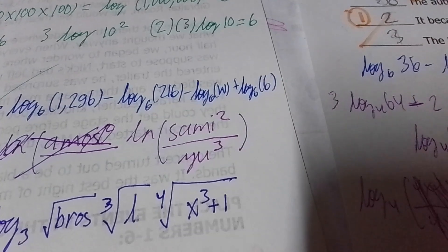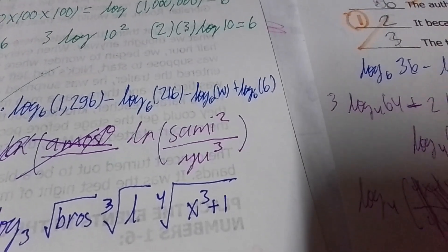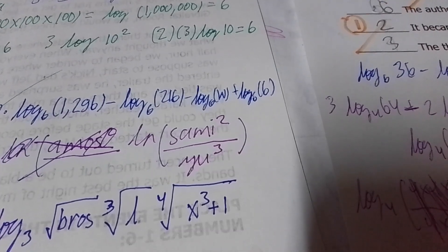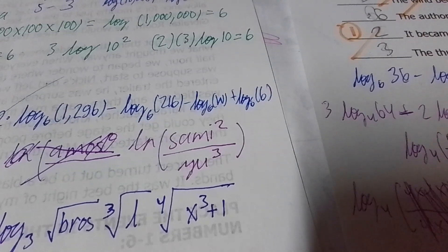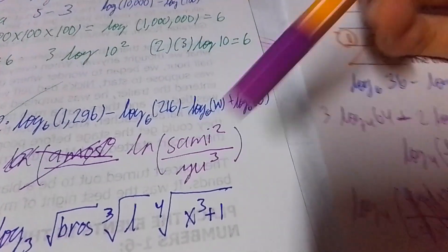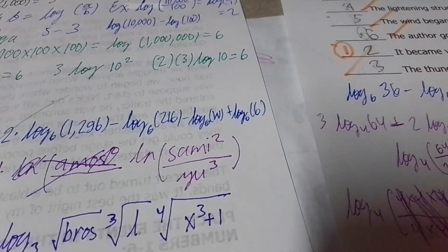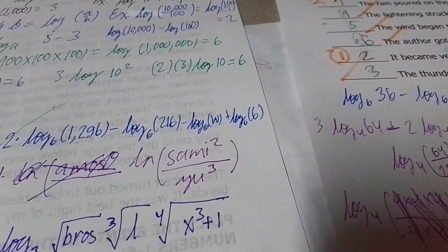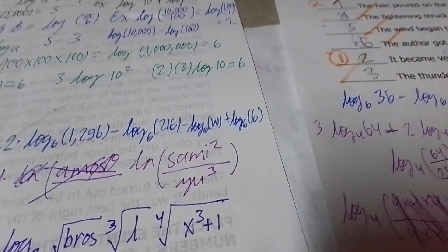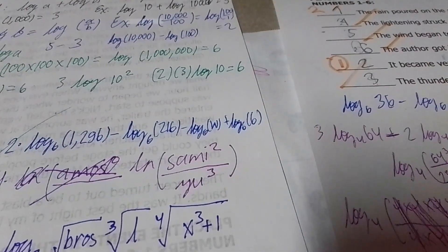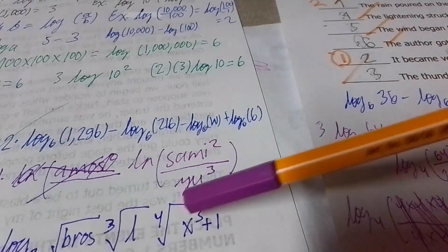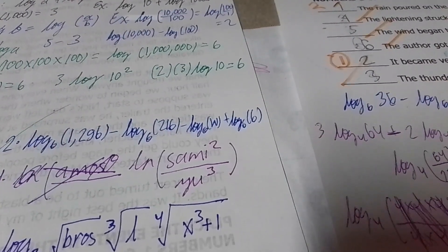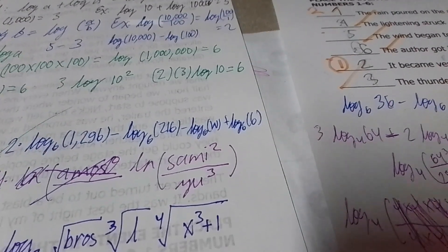How do we translate this simplified form into its expanded form? SAMI is in the numerator, and U is in the denominator. What's in the numerator is always added when expanded; what's in the denominator implies subtraction.